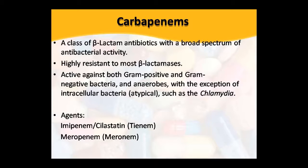Carbapenems are beta-lactam antibiotics with very broad spectrum activity, meaning they show their effect on many bacteria. They are resistant to beta-lactamases enzymes. They show their effect on both gram-positive and gram-negative bacteria. With the exception of some anaerobes and intracellular bacteria like Chlamydia, they act on all anaerobes. Imipenem and meropenem are the agents of carbapenems.